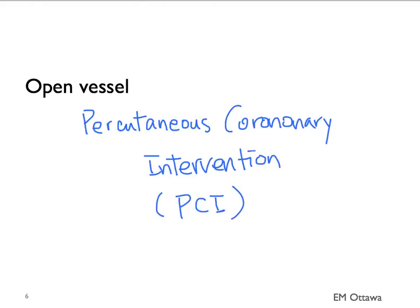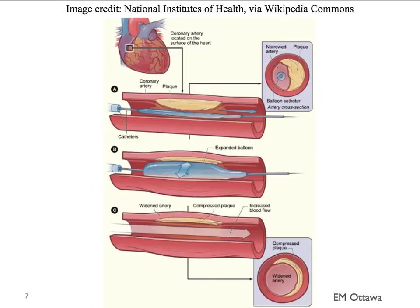The main treatment for ST elevation MI is to open the vessel. This is done by percutaneous coronary intervention, or PCI. In PCI, a small guide wire is inserted into the site of the blocked coronary artery, a balloon is inflated, and a stent is kept in place at the same spot to allow for regular flow through the coronary artery.